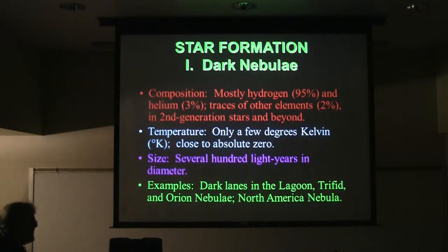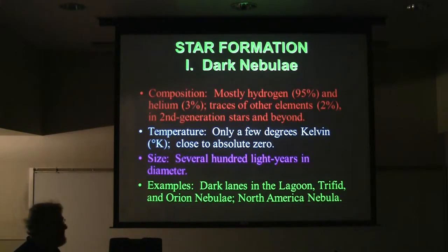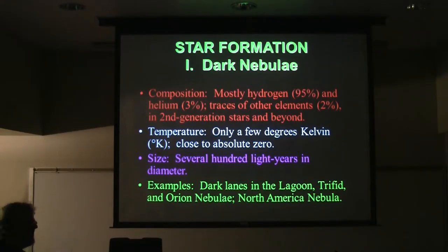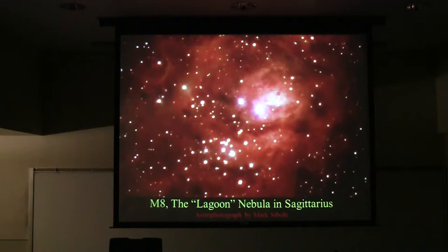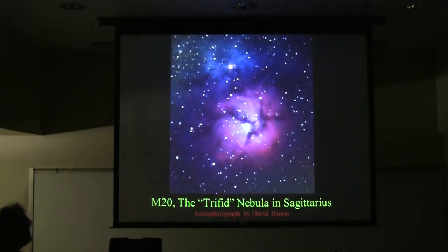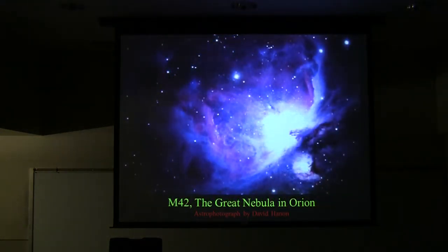Here are some other examples: the dark lanes in the Lagoon Nebula in Sagittarius (M8), the Trifid Nebula (M20), the Orion Nebula (M42) getting ready to come up on these evenings, and the North America Nebula in Cygnus. Here's the Lagoon, with the dark lines through it dividing the nebula. Here are nice ones in the Trifid Nebula, and here's the Orion Nebula with dark fingers sticking in from the side — also dark nebulae.